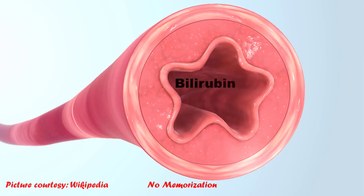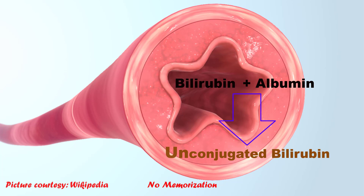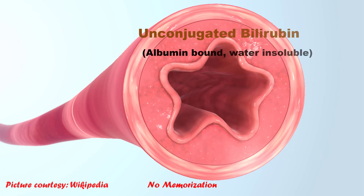Bilirubin is now in circulation. It is a toxic molecule, hence it must be disposed of safely. Bilirubin will then bind with a plasma protein such as albumin. This molecule is called unconjugated bilirubin. This unconjugated bilirubin has two significant properties: it is albumin-bound and it is water insoluble. Because it is protein-bound and water insoluble, it will not pass through the urine. This is very important to remember.